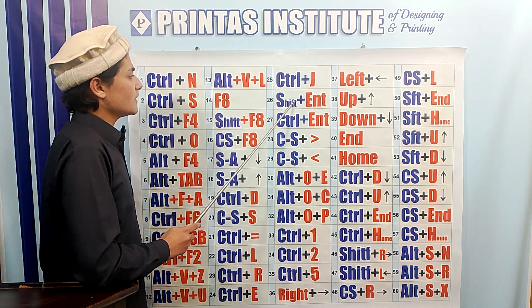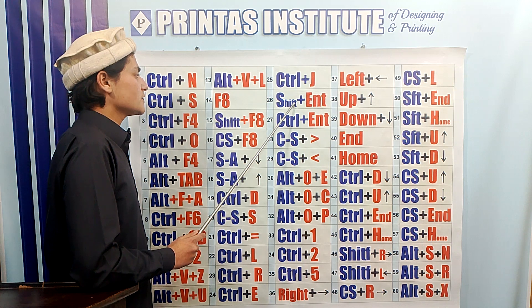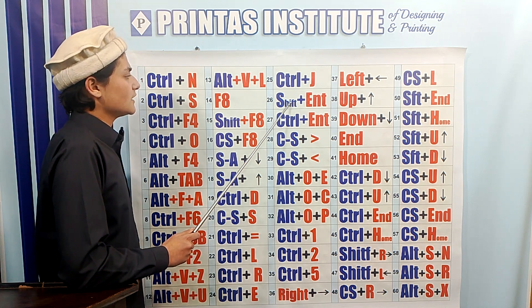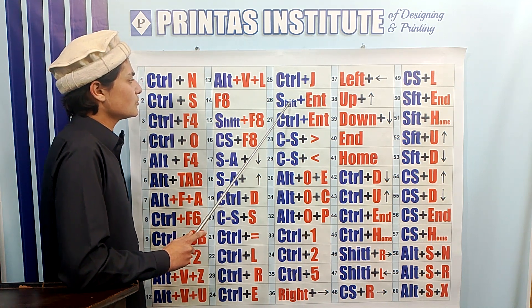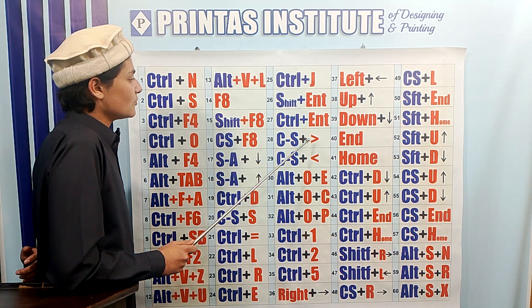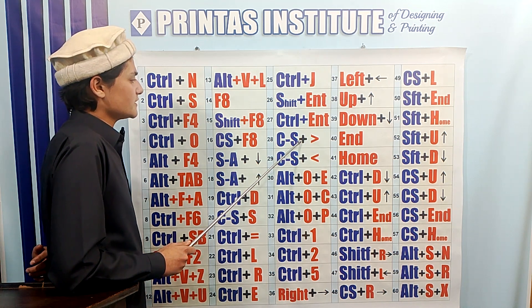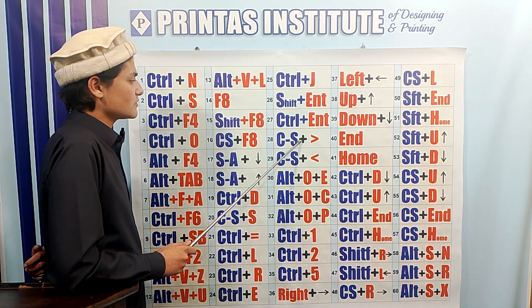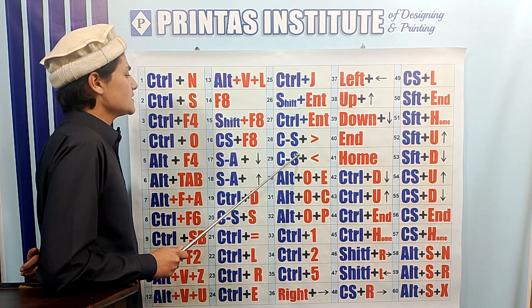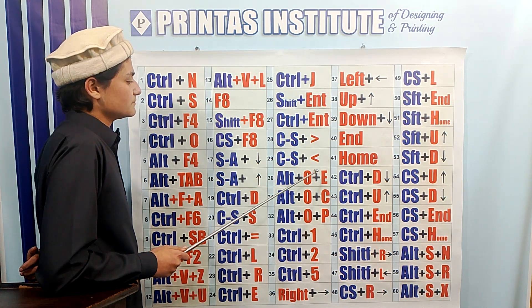Shift Enter is used to forcefully justify the text, in which the last line of the text will become equal to the other lines. Ctrl Shift Greater Than is used to increase the size of the text by two points. Ctrl Shift Less Than is used to decrease the size of the text by two points.